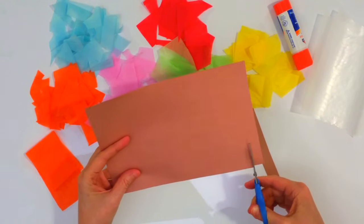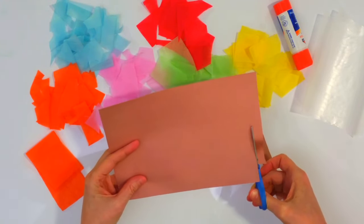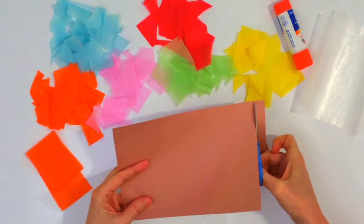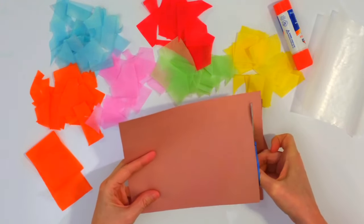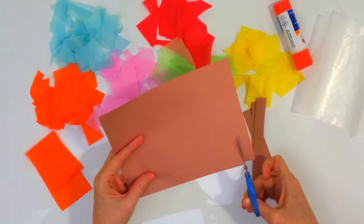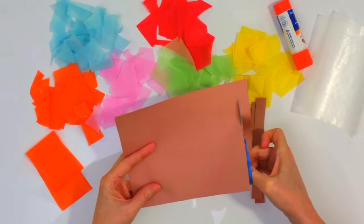First you're going to cut the frame of the stained glass and it could be black or another dark color and make them all the same size, about a half an inch thick.